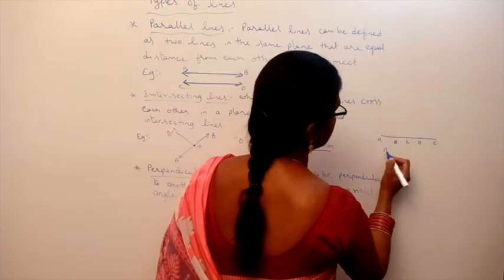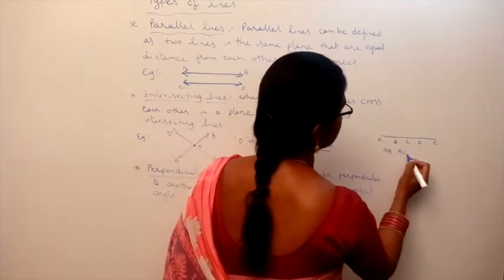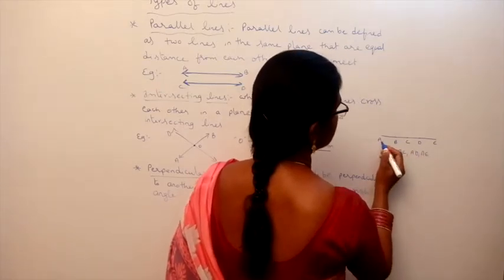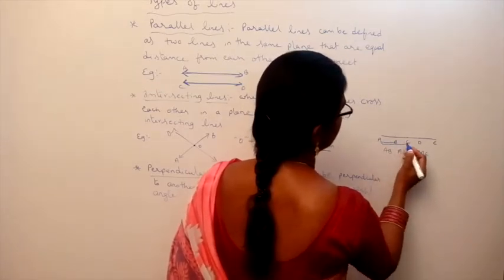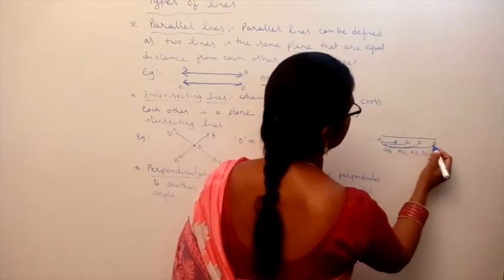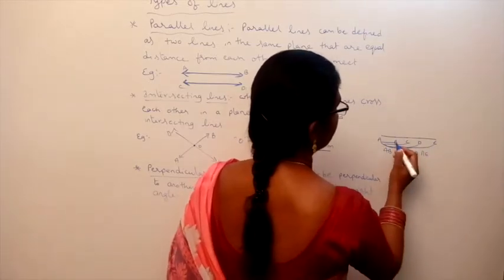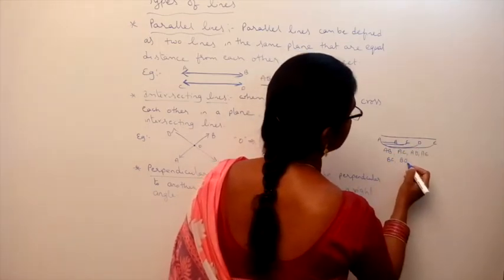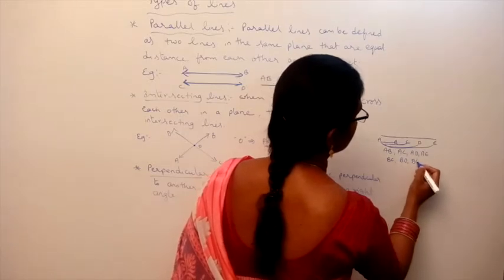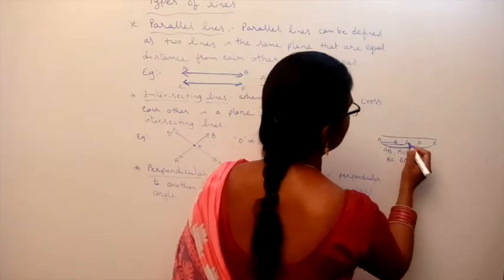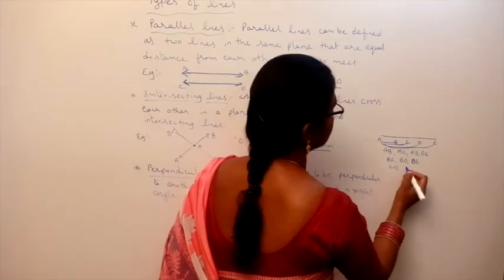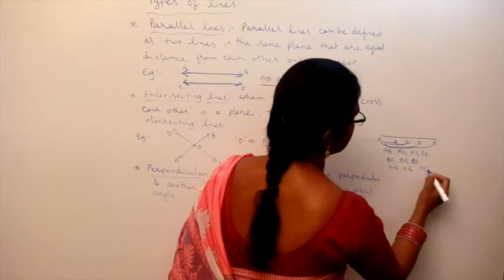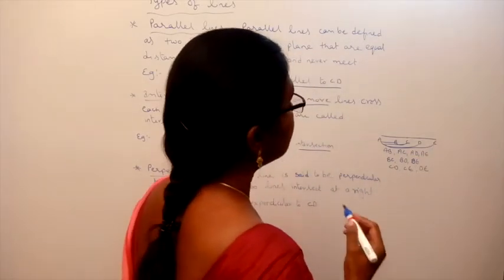Starting from A: AB, AC, AD, AE. From B: BC, BD, BE. From C: CD, CE. From D: DE. We can write these many line segments in total — ten line segments.